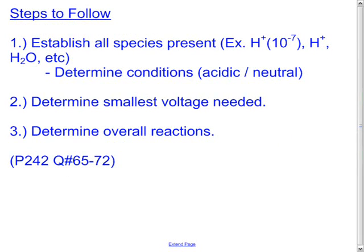To sum up, establish all species present. So if you're dealing with a type 2 cell that's aqueous, worry about things like how acidic is it, is there water, what kind of reactions could happen with water, determine the conditions. Once you've done that, determine the smallest voltage needed, and then determine the overall reactions. Homework is given. Page 242, questions number 65 to 72.